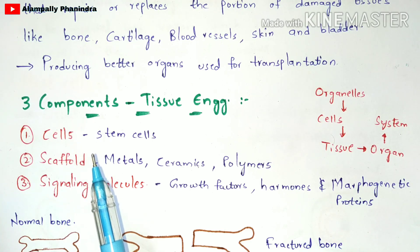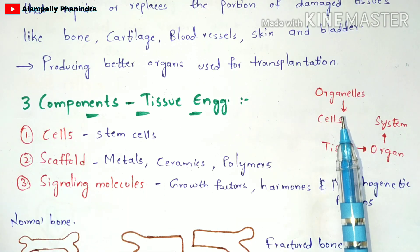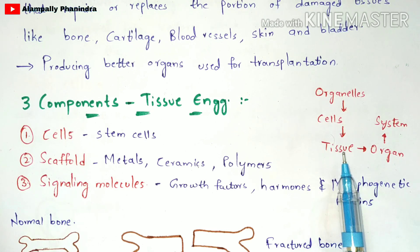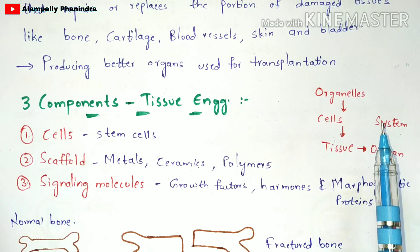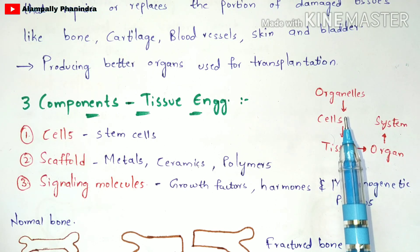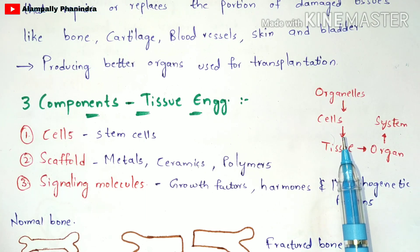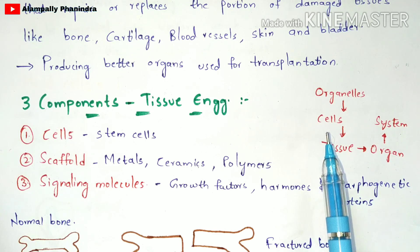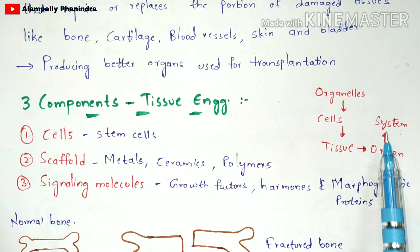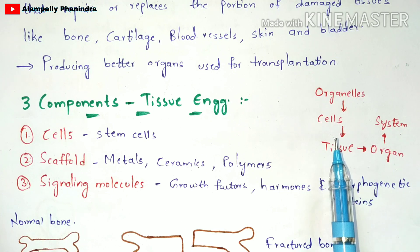An important concept to remember: organelles form cells, cells form tissues, tissues form organs, and organs form the total organ system — that is how the human body is designed. In tissue engineering, you should remember that cells form the tissue, which is central to the procedure.